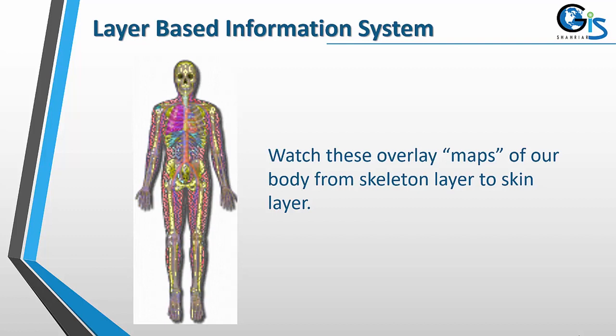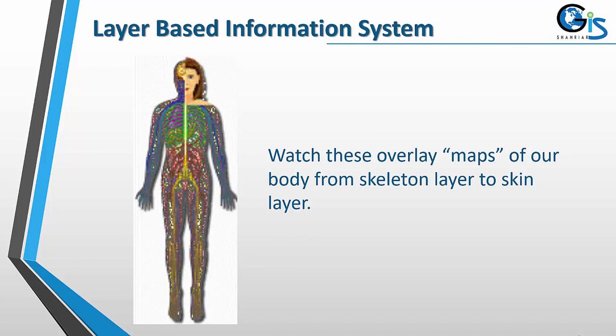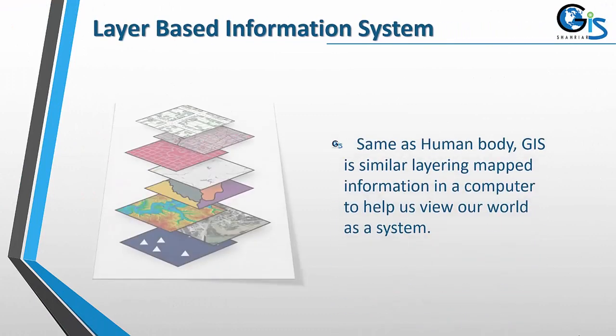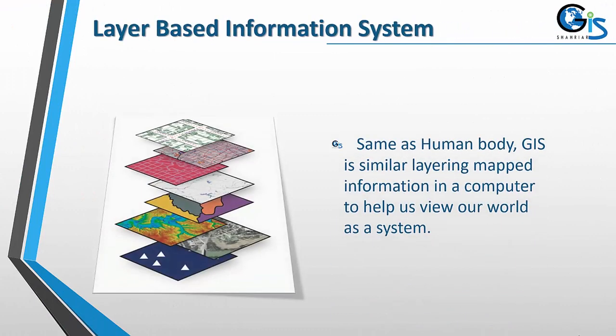GIS is a layer-based information system. Watch this overlay of maps of our body, from a skeleton layer to a skin layer. Just like a computer, GIS is similar — layering map information in a computer to help us view our world as a system.